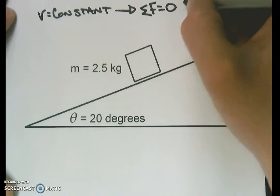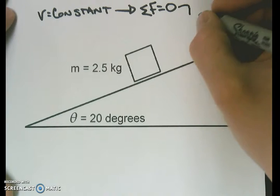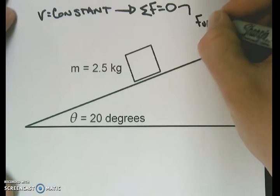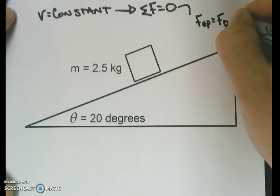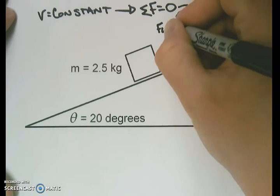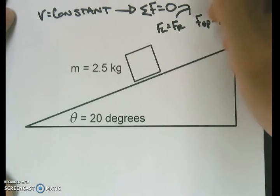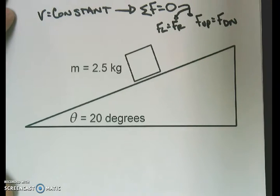For our purposes this can mean two things. It can mean our forces up will equal our forces down, and it also could mean our forces left will equal our forces right. Now that we know that, that allows us to do a lot of work with this force diagram.